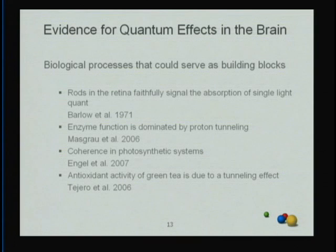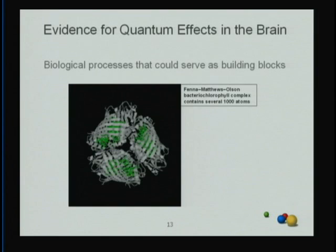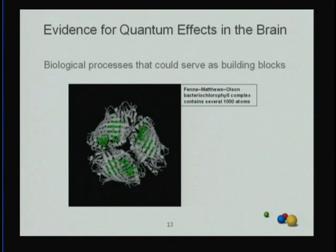Another important piece of work studies photosynthesis and how it can be so amazingly efficient. It is now well understood that to transport energy captured in photosynthesis through the so-called FMO complex — the Fenna-Matthews-Olsen complex — large-scale coherence takes place in this molecule, which is comprised of at least several thousand atoms. Large-scale coherence facilitates photosynthesis.